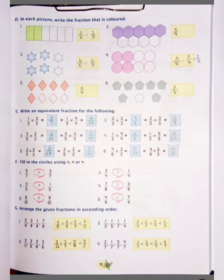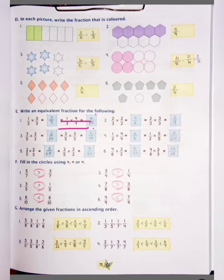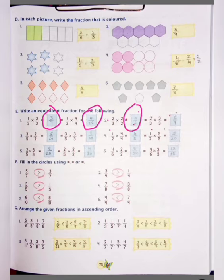Question E: Write an equivalent fraction for the following. We will multiply — 1 × 3 = 3, so we write 3; and 3 × 3 = 9, so we write 9. Next: 1 × 4 = 4 and 3 × 4 = 12, so our answer will be 3 upon 9 and 4 upon 12. Next: 2 × 2 = 4, 3 × 2 = 6 — so 4 upon 6; and 2 × 3 = 6, 3 × 3 = 9 — so 6 upon 9. Numbers 3, 4, 5 and 6 — you can practice yourself.